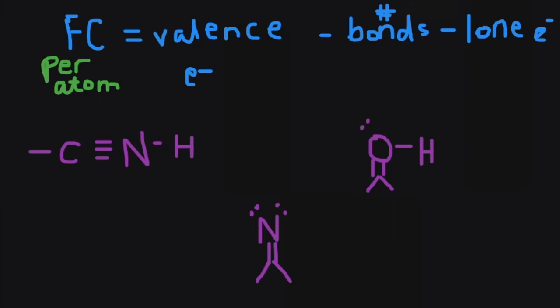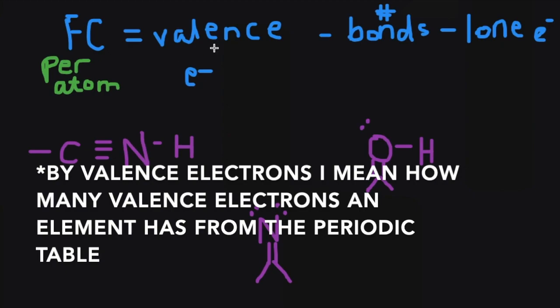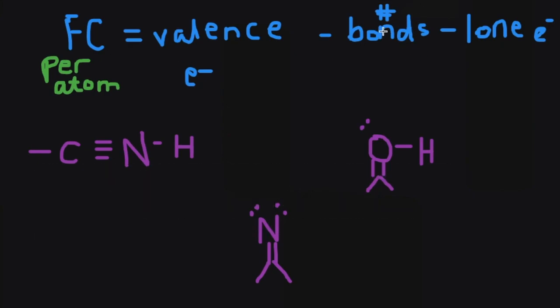You might see a couple different equations online for calculating formal charge. The one I like to use to find the formal charge per atom in a compound is: formal charge equals the number of valence electrons minus the number of bonds minus the number of lone electrons. Let's take a look at the first example. If we want to find the formal charge of carbon, the first thing we will do is write out the number of valence electrons. Carbon has four valence electrons as per the periodic table.